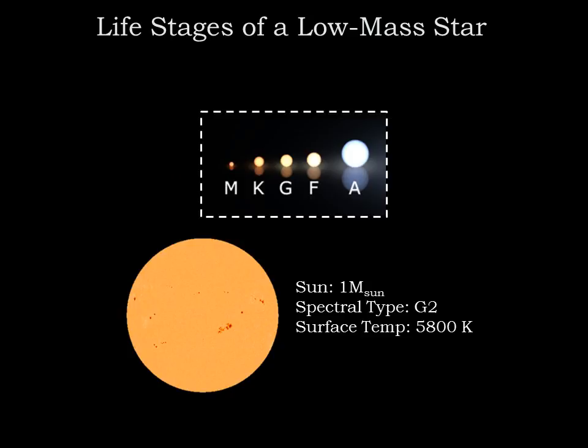Our sun is right in the middle at G2, corresponding to a surface temperature of about 5800 Kelvin. Our sun is currently on the main sequence fusing hydrogen, but eventually, in about 5 billion years, the sun will exhaust its hydrogen and undergo a series of dramatic changes leading up to its death.